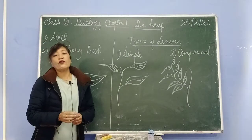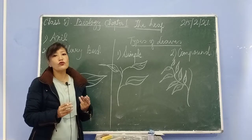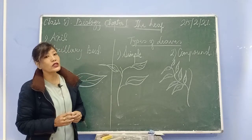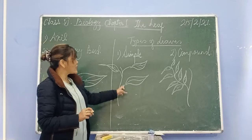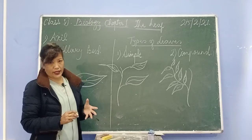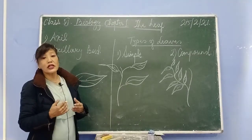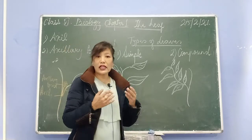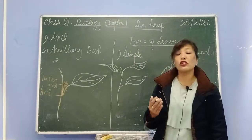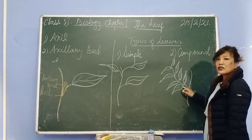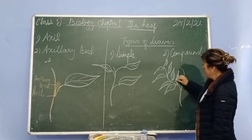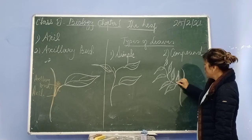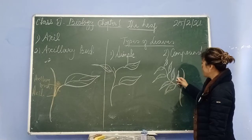Now the types of leaves. Leaves are of two types: one is simple leaf and the other one is a compound leaf. Now what is a simple leaf? A simple leaf is a single leaf which is never divided into leaflets. What do you mean by the term leaflets? Leaflets resemble the entire leaf — they look like a leaf — but these leaflets do not arise from the stem. They arise from the petiole. So the small leaves that arise from the petiole are called leaflets.